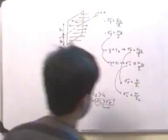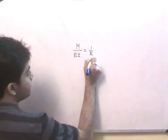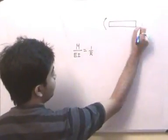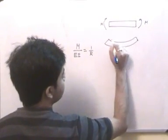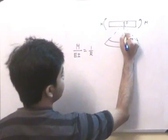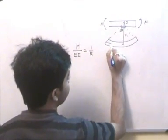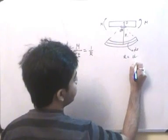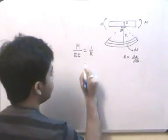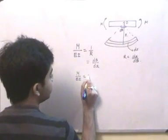Now I wish to share the concept of flexural rigidity. From the previous lecture, M/EI = 1/R. When a beam is subjected to pure bending by moments M and M, it bends and the center of curvature is O at radius R. This R equals dx/dθ, so M/EI = dθ/dx.